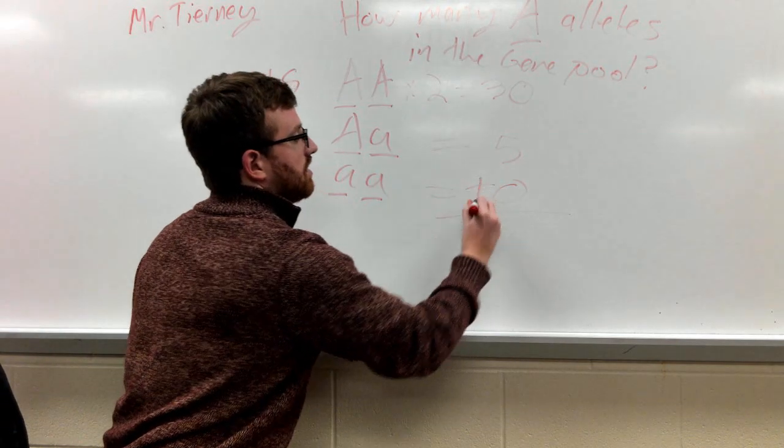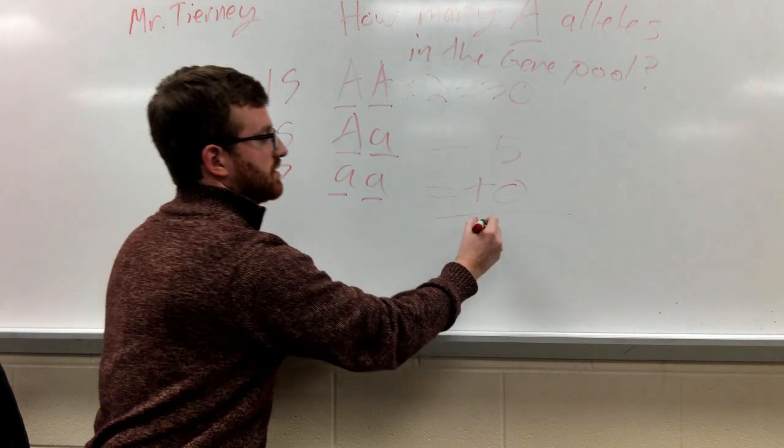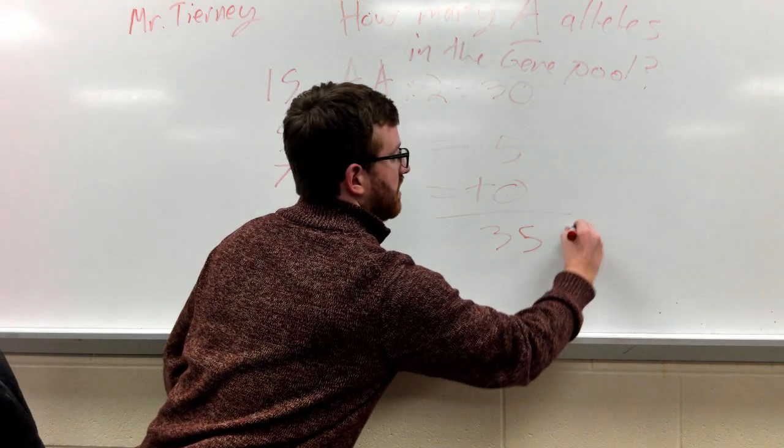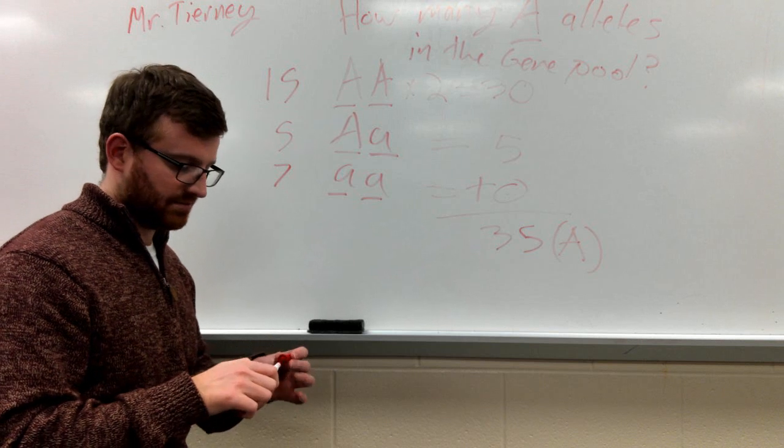If you add these all up - 30 plus 5 plus 0 - it's going to give you 35 capital A alleles. And that's all.